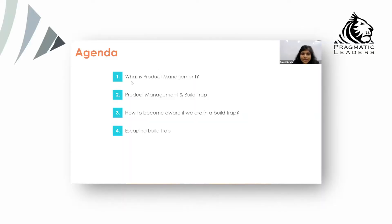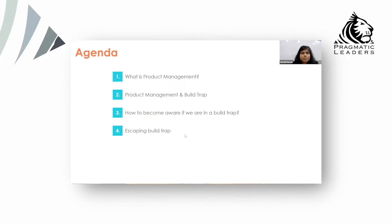The agenda for today is getting into what product management is, and then understanding product management and the build trap. Next is how do we become aware we are in a build trap? And if we know, how do we escape? Is there a simple framework for us to escape? I'll try to keep it very simple without getting into a lot of jargon. If something is not clear, put it in the chat box so I can quickly respond while I'm on that slide.